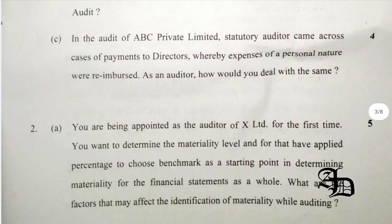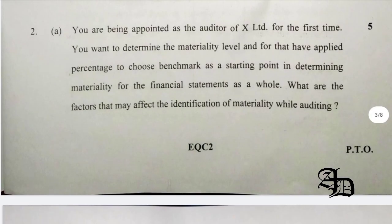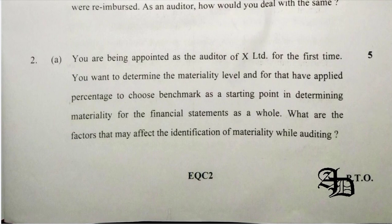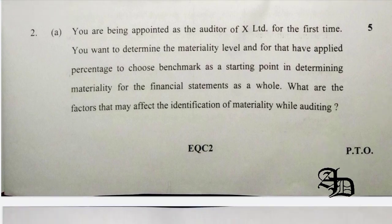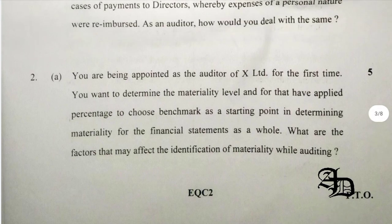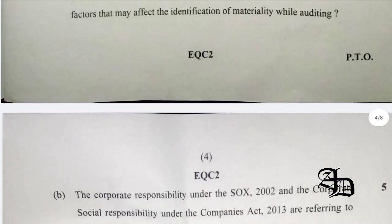Some questions were based on case studies and logic. Question 2c was related to directors being reimbursed for personal nature expenditures — how will you deal with it as an auditor. Question 2a was related to factors that may affect the identification of an appropriate benchmark, which was a tricky question directly from the annexures of the Standard on Auditing. Factors include elements of financial statements such as assets, liabilities, equity, and revenue; items requiring user attention; the nature and life cycle of the entity; and the entity's ownership structure.